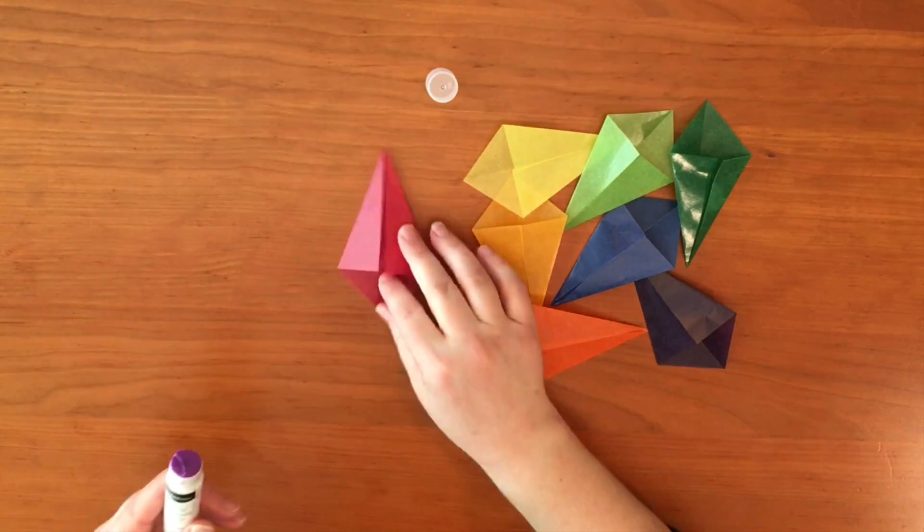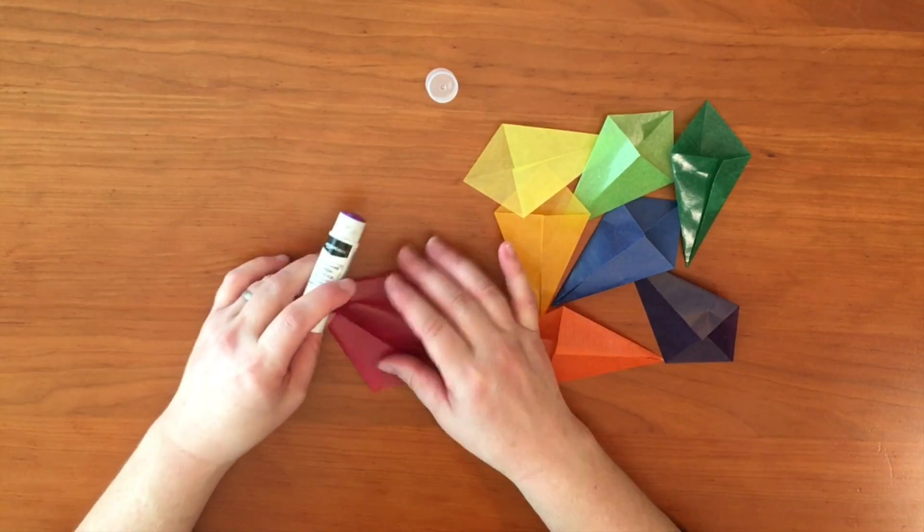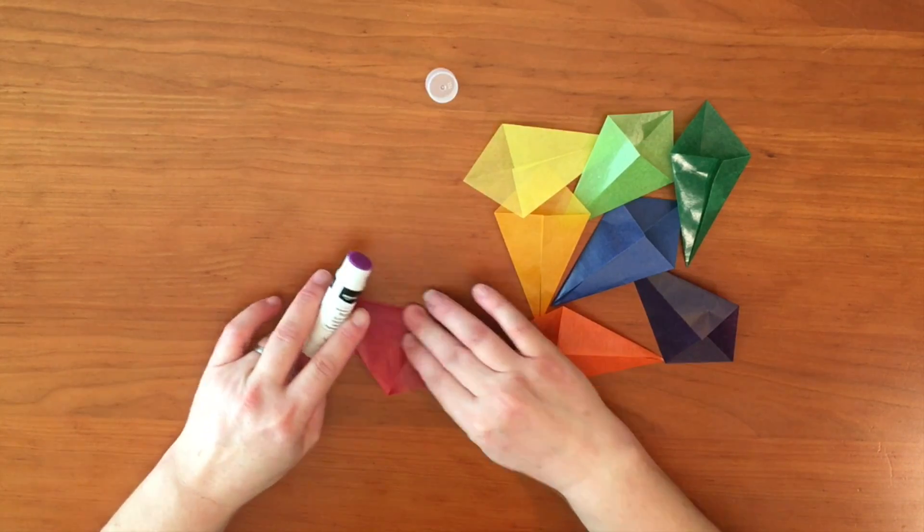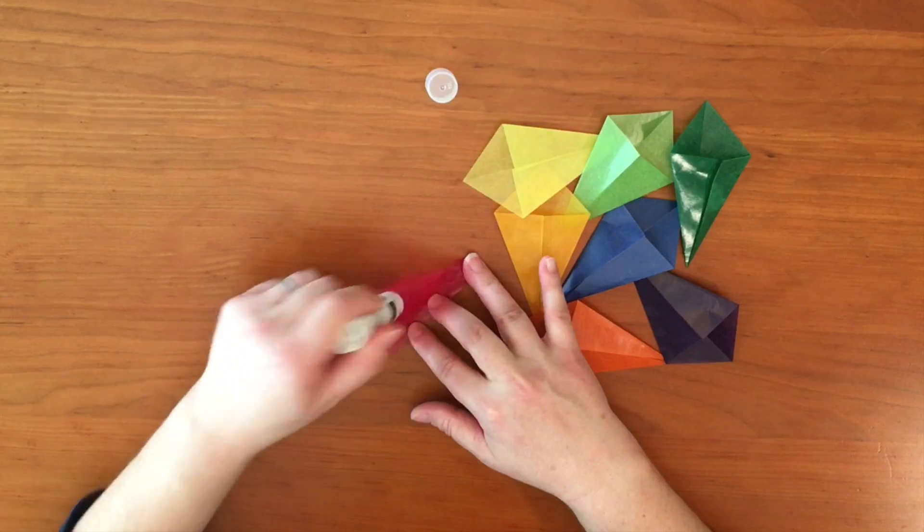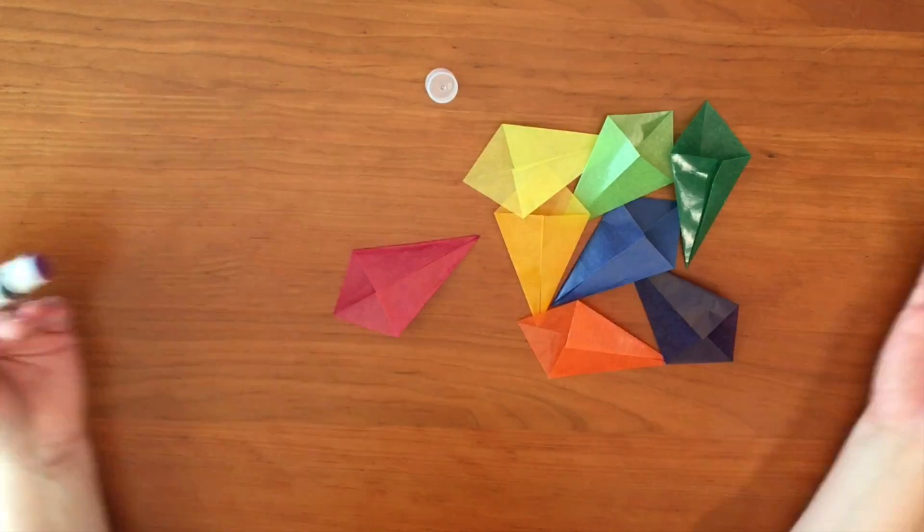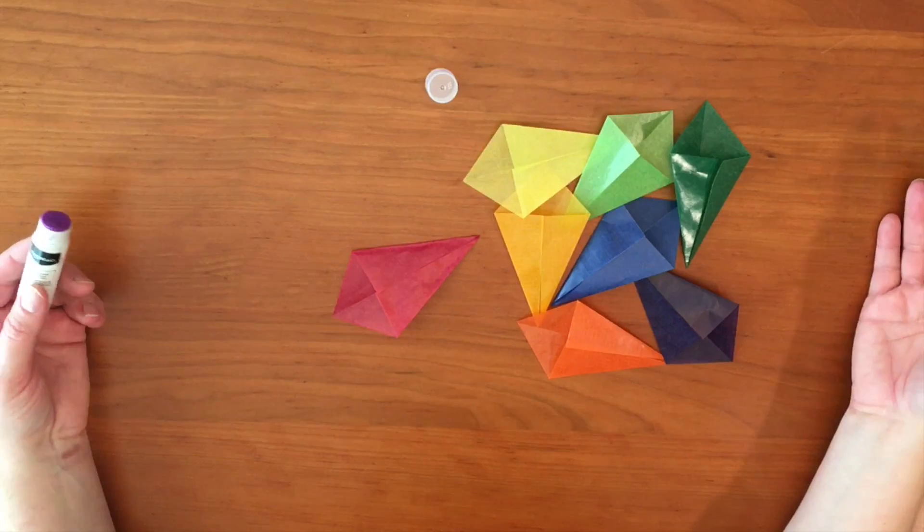Now if you want to, you can glue down the flaps of each piece just by putting a little bit of glue inside here. And that makes them stay down a little bit better, but it's not really necessary for this particular star.